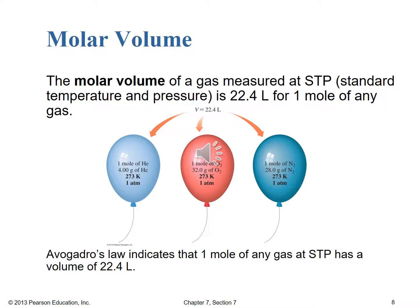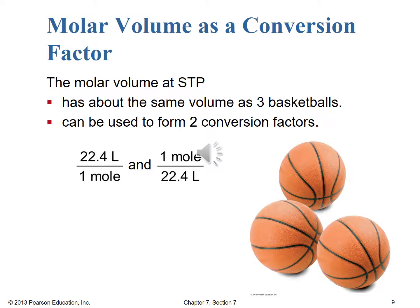Avogadro's Law indicates that one mole of any gas at STP should occupy a volume of 22.4 liters. We'll look into real gases later on and we'll see there's some deviation, but by and large that rough volume of 22.4 liters per mole is pretty well observed in real-world experiments. That molar volume of 22.4 liters for one mole of gas is about the same volume as three regulation-sized basketballs. And because we now have a relationship that holds — remember, only at STP — we can use the molar volume as a conversion factor: 22.4 liters of any gas at STP equals one mole.